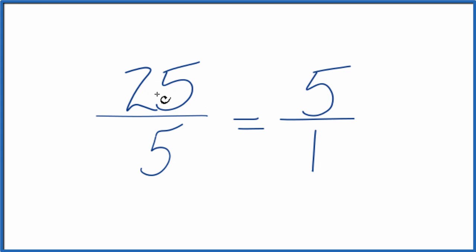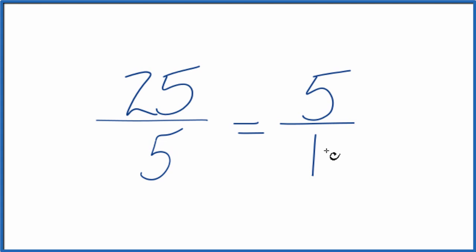So the fraction 25 over 5, 25 fifths, that equals 5 over 1. These are the same. They're equivalent. They're just represented differently.